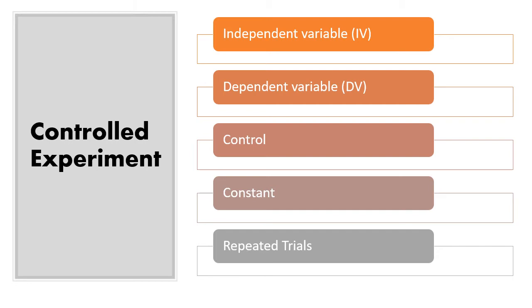Alright, so when you do an experiment, you have an independent variable, which is, I like to say, this is the one that I, as the experimenter, change. Okay, so this is the variable that you are changing, the manipulated variable.